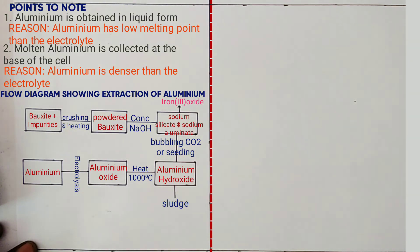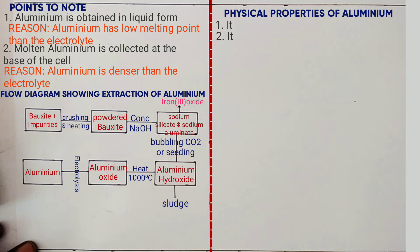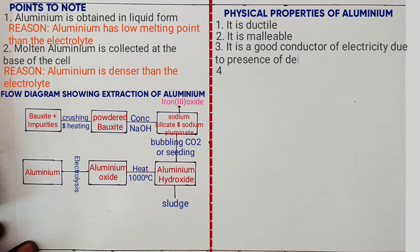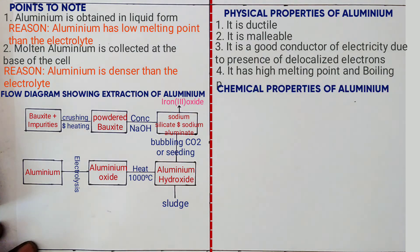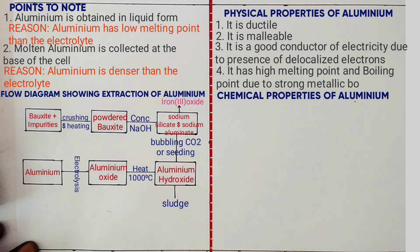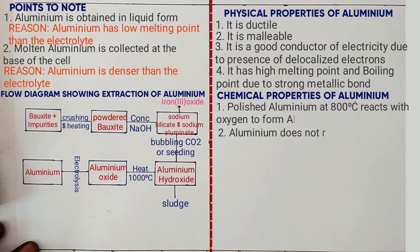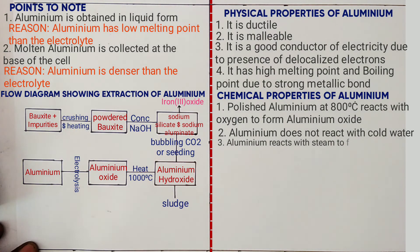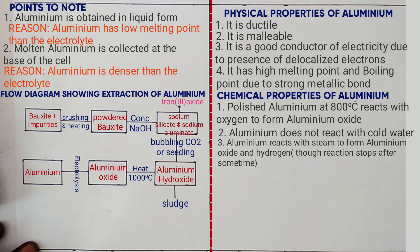The physical properties of aluminium: it is ductile; it is malleable; it is a good conductor of electricity due to the presence of delocalised electrons; it has high melting and boiling points due to strong metallic bonds. Chemical properties: polished aluminium reacts with oxygen at about 800°C to form aluminium oxide; aluminium does not react with cold water; aluminium reacts with steam to form aluminium oxide and hydrogen gas; hot aluminium reacts with chlorine gas to form white solids which sublime; polished aluminium reacts with dilute acid slowly to form aluminium salt and hydrogen gas.